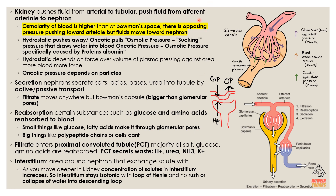I drew something here: this is the Bowman's capsule and these are the glomerular capillaries. Glomerular capillaries are a special type of capillary in the kidneys — different from other types — they have higher blood pressure, or higher hydrostatic pressure, than other capillaries. That high blood pressure helps push blood through the filtration membrane and into the Bowman's capsule.